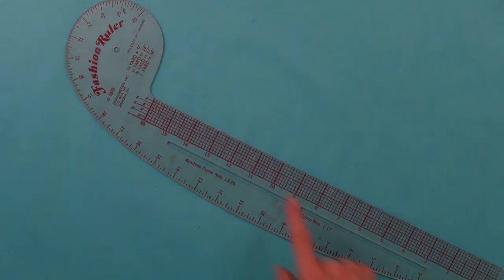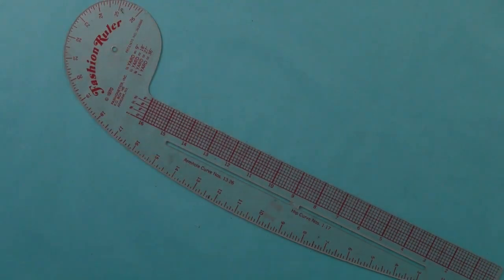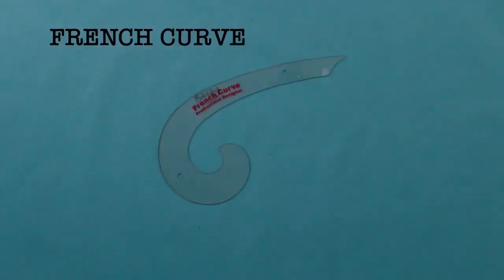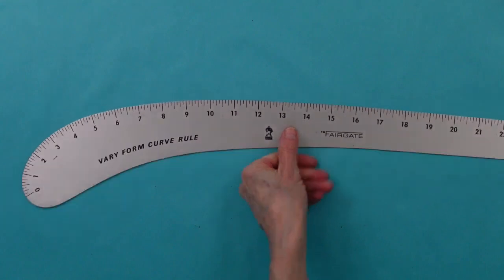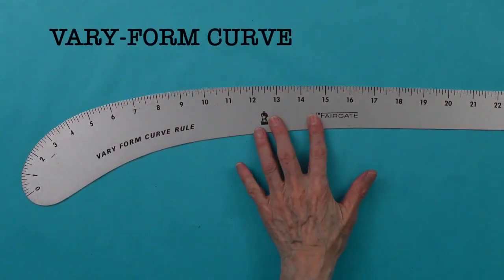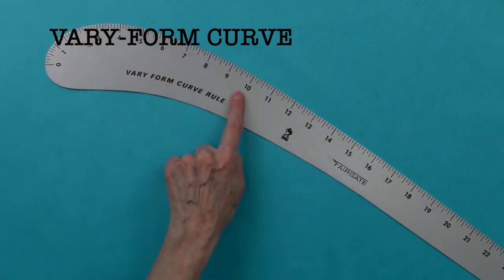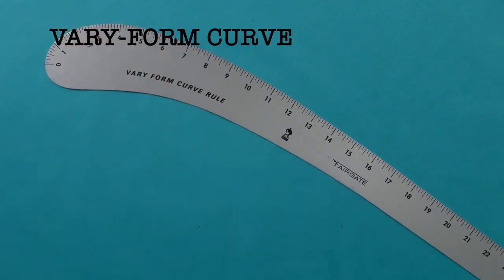Usually Dritz has them. It's great for armholes, measuring, etc. It's also good for hip curves. One of my favorites, a French curve. And my very, very favorite is the vari-form curve. This is 24 inches. It's wonderful for armholes, all kinds of curves, crotches.